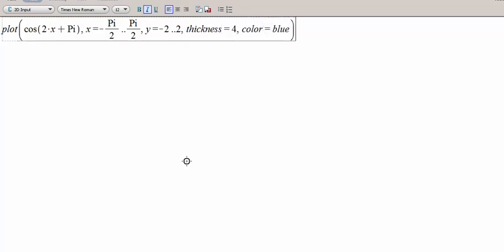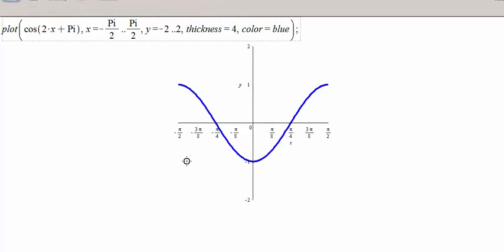So let's plot the following. Let's plot the cosine of 2 times theta or x between for an x value negative pi over 2 to pi over 2. And let's go from y equals negative 2 to 2. And there it is.